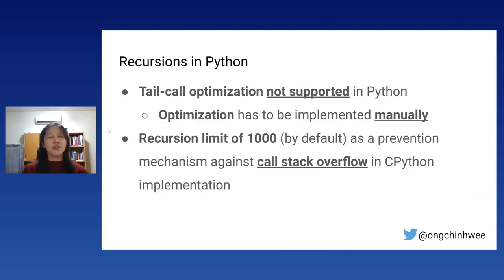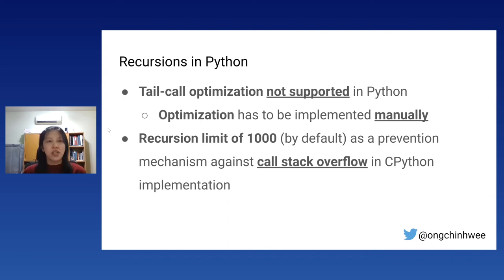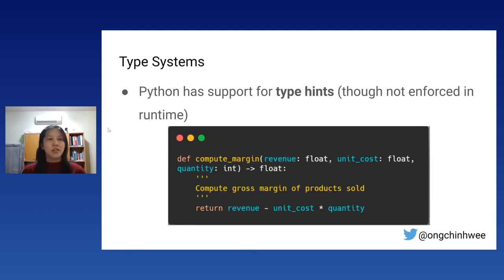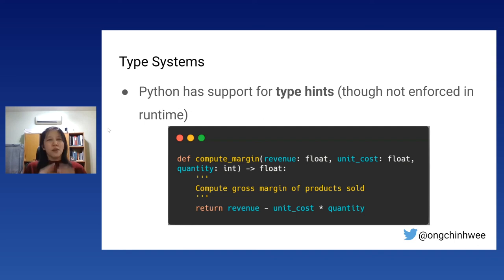A note on recursion in Python: tail call optimization is not supported and must be implemented manually. Additionally, there is a default recursion limit of 1000 as a stack overflow prevention mechanism in the CPython implementation.